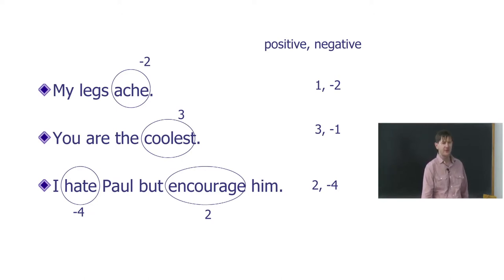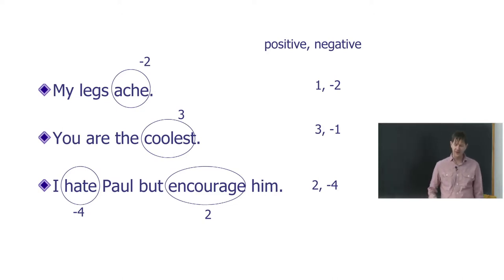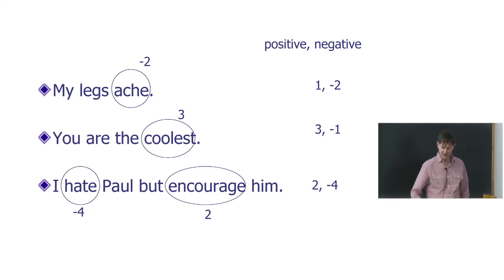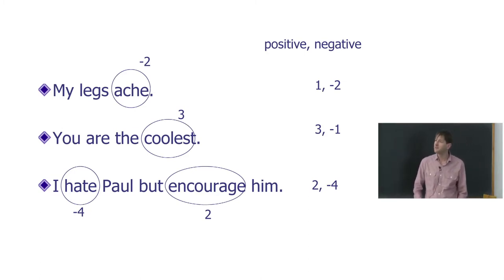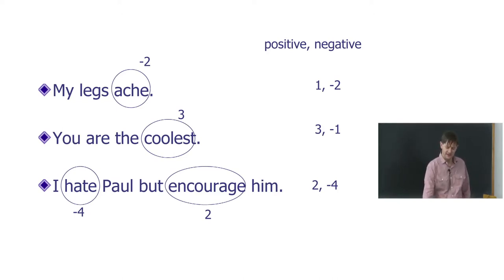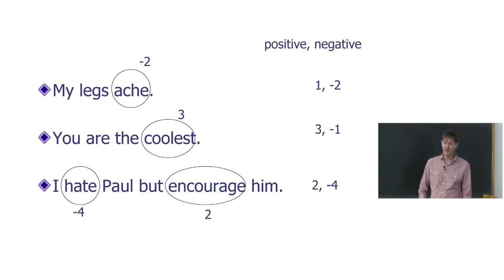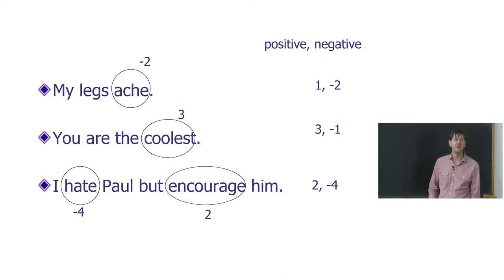For 'you are the coolest': 'you,' 'are,' and 'the' get ignored. 'Coolest' is a plus three word, so the score is plus three, minus one. And for the final sentence, there's a positive and a negative word, so the sentence gets a score of plus two, minus four — mildly positive and strongly negative.